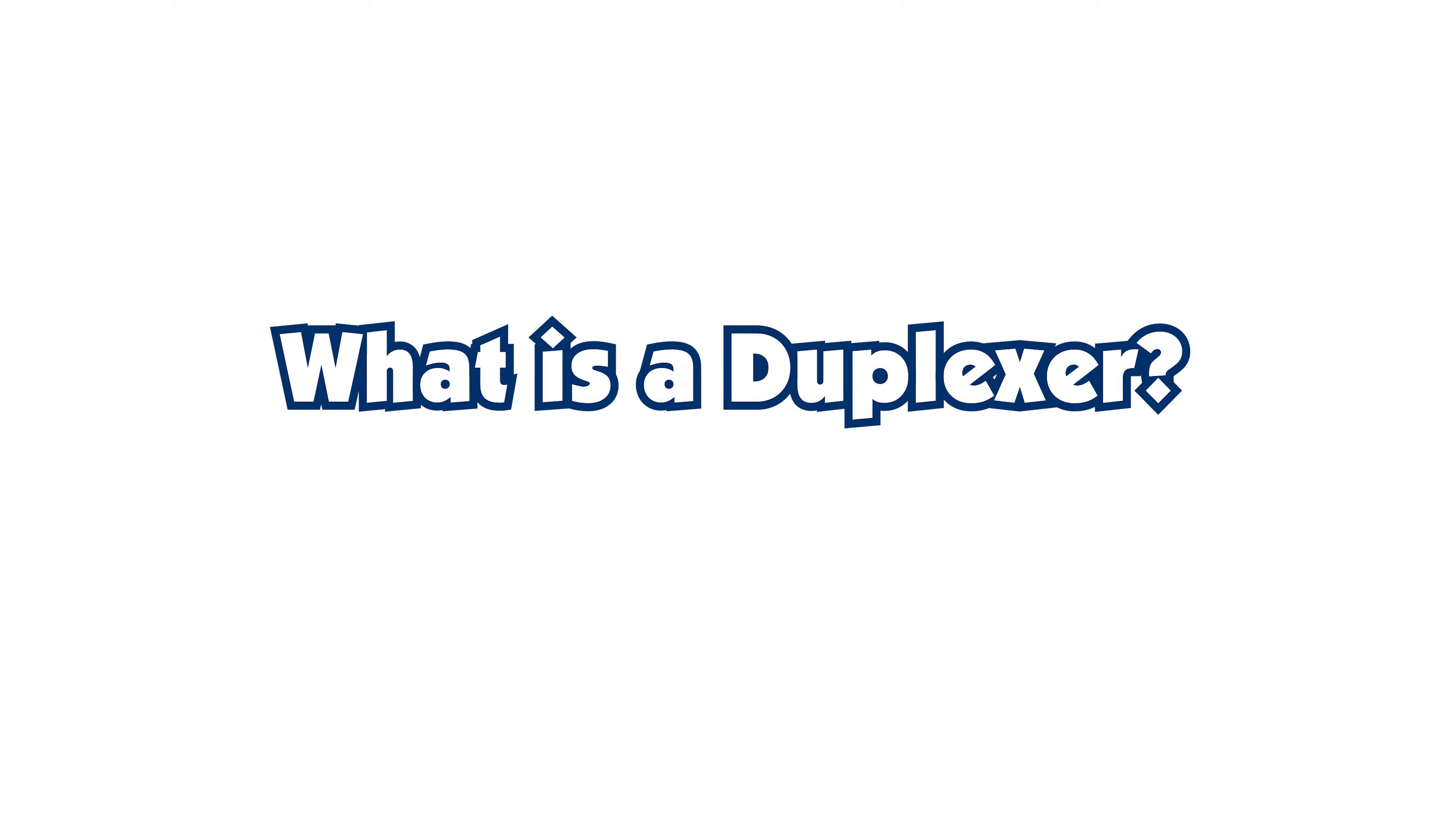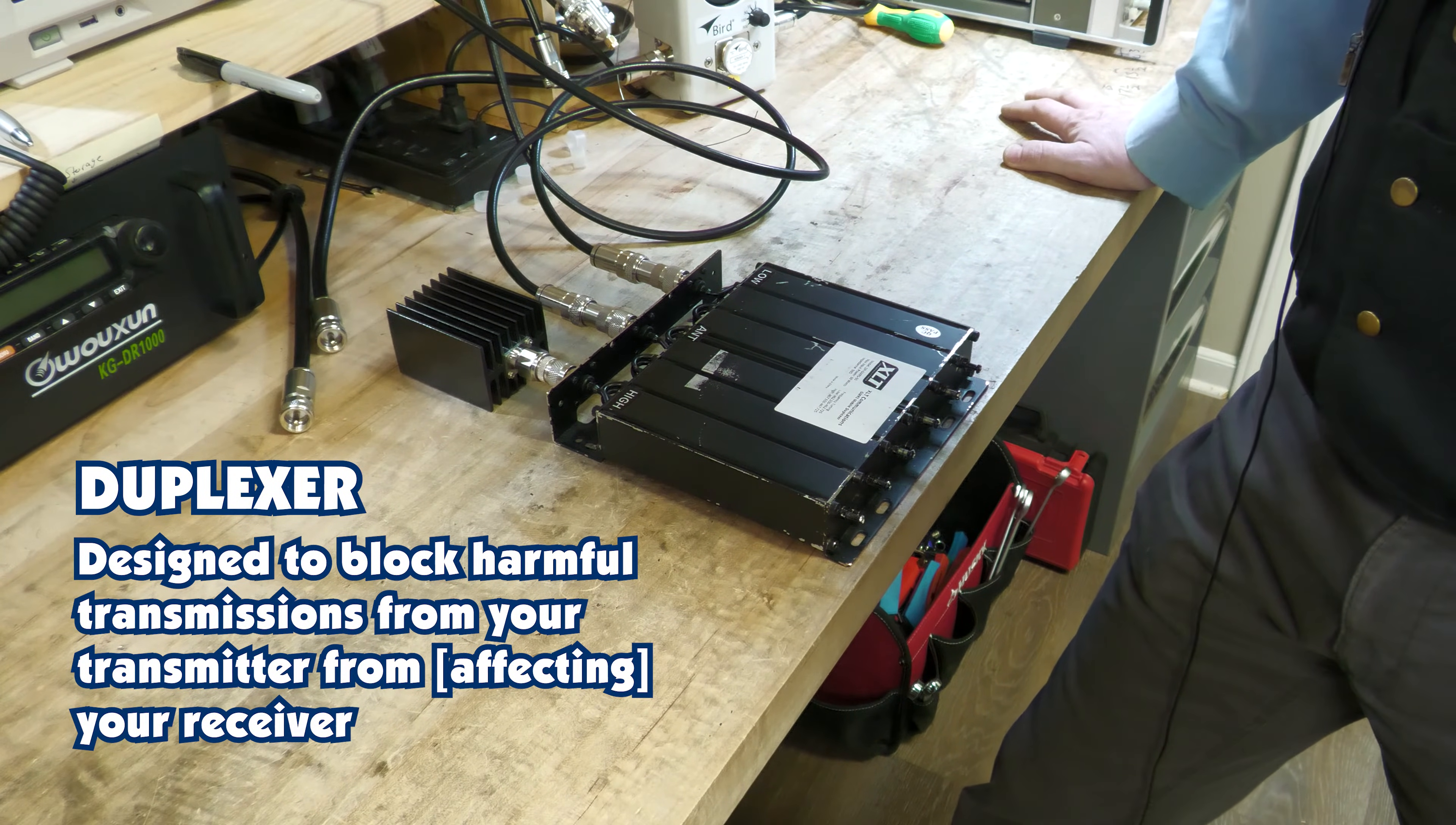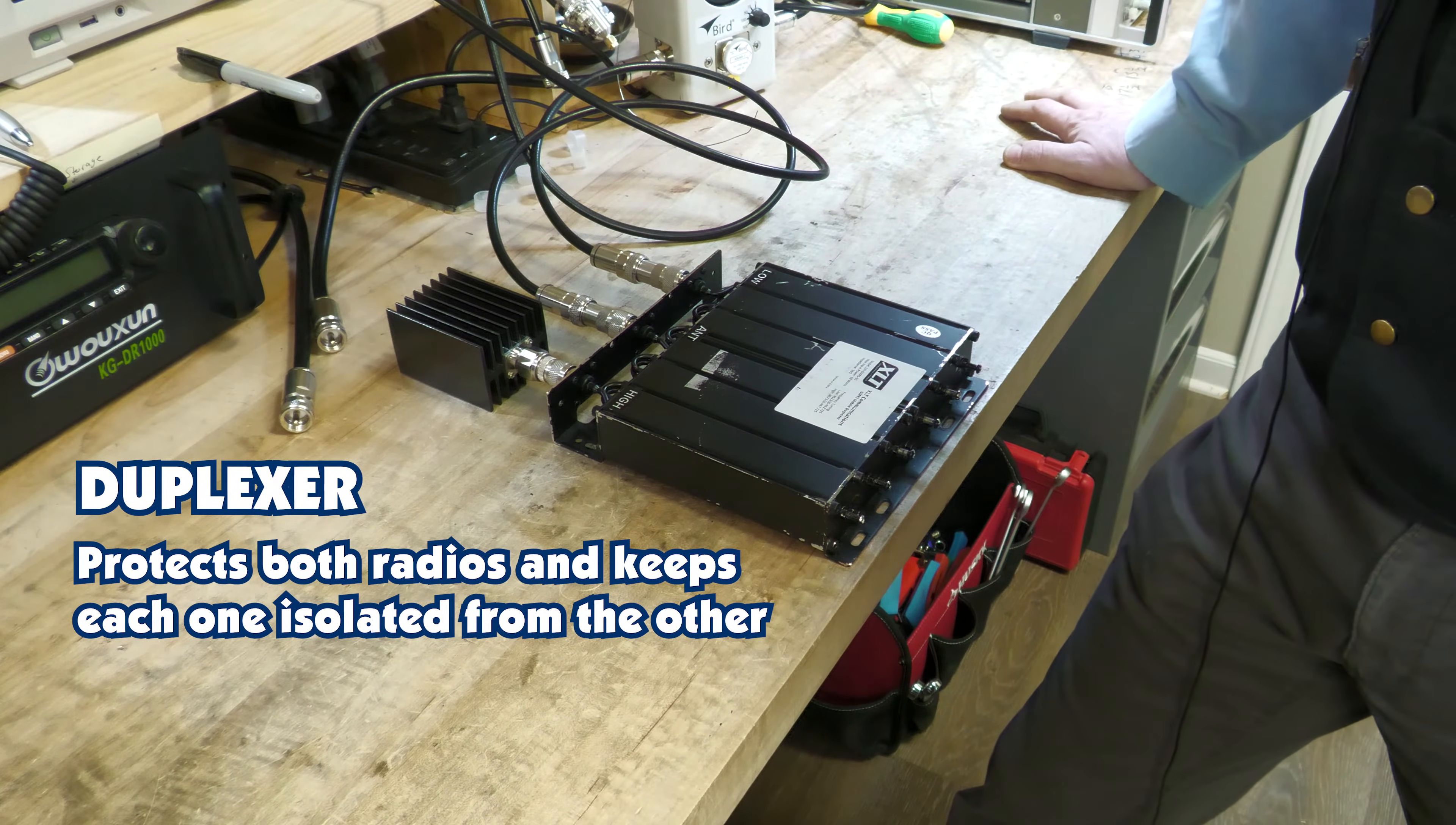What is a duplexer? When you have a repeater set up, you don't want your transmitter to interfere and send harmful emissions into your receiver because it's hooked up to the same antenna. What we do is we take a duplexer. It's designed to actually block those harmful transmissions from your transmitter from your receiver. Therefore, your receiver can use, because it has an offset of 5 MHz, the antenna simultaneously to listen to the other frequency. It protects both radios and keeps each one isolated from the other.